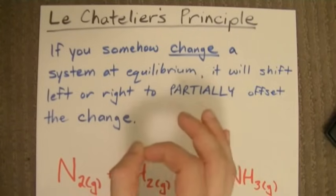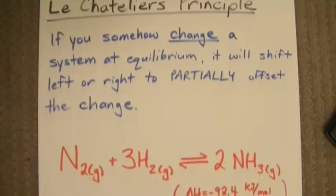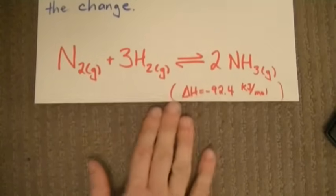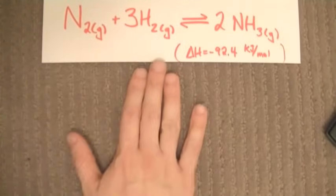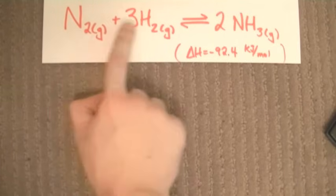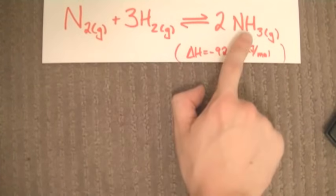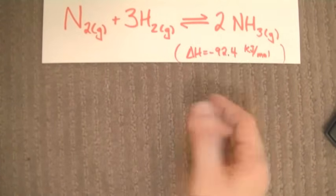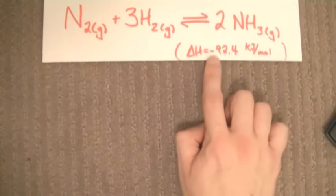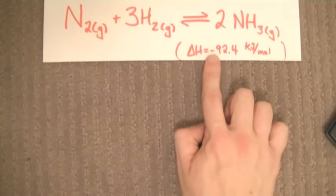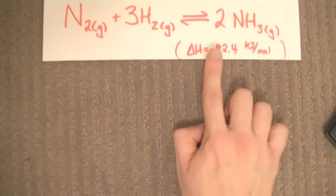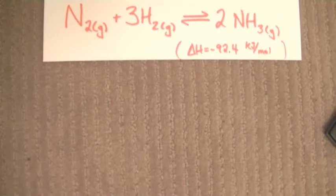This works well with an example. It's called the Haber process - reacting nitrogen and hydrogen to produce ammonia. One last thing to note is that it's an exothermic process, which means heat is produced over the course of the reaction.